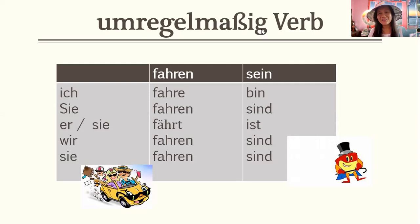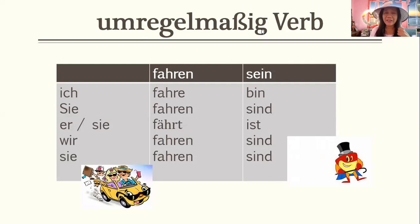What about sein? Sein is the verb 'to be.' Ich bin — I am. Sie sind — you are. Er ist — he is. Sie ist — she is. Wir sind — we are. Sie sind — they are.